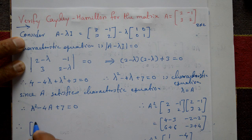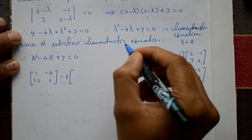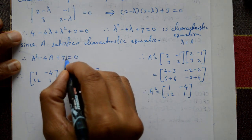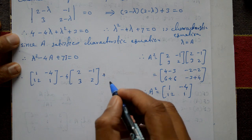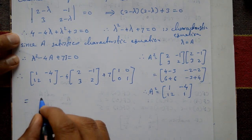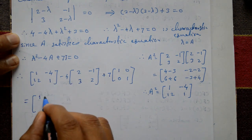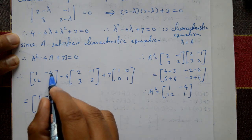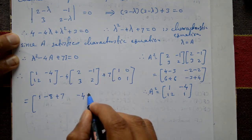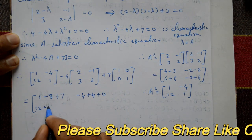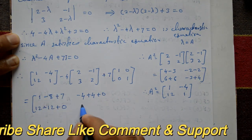Now substituting into the equation: A squared minus 4A plus 7I. A squared is [[1,-4],[12,1]], minus 4 times A which is [[2,-1],[3,2]], plus 7 times the identity matrix [[1,0],[0,1]]. Adding element by element: first element: 1 minus 8 plus 7 = 0. Second element: −4 plus 4 plus 0 = 0. Third element: 12 minus 12 plus 0 = 0.